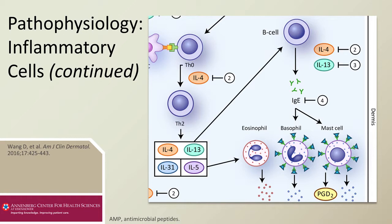IL-4 and IL-13 activate B cells to produce IgE immunoglobulin. This IgE binds to receptors located on the surface of basophils and mast cells.